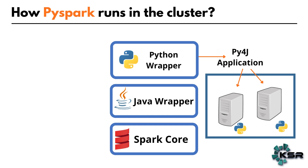Inside the AM container we have a Python driver, and within each worker node there is a Python worker. Along with the JVM that is created, a Python worker will be available on each node to which tasks are assigned from the AM container — for executing Python-specific libraries or any UDFs. But for normal PySpark DataFrame operations that the Spark core can handle, there is no need for Python workers; those are executed using the normal Python wrapper. This is how a PySpark application is executed at runtime in the cluster.